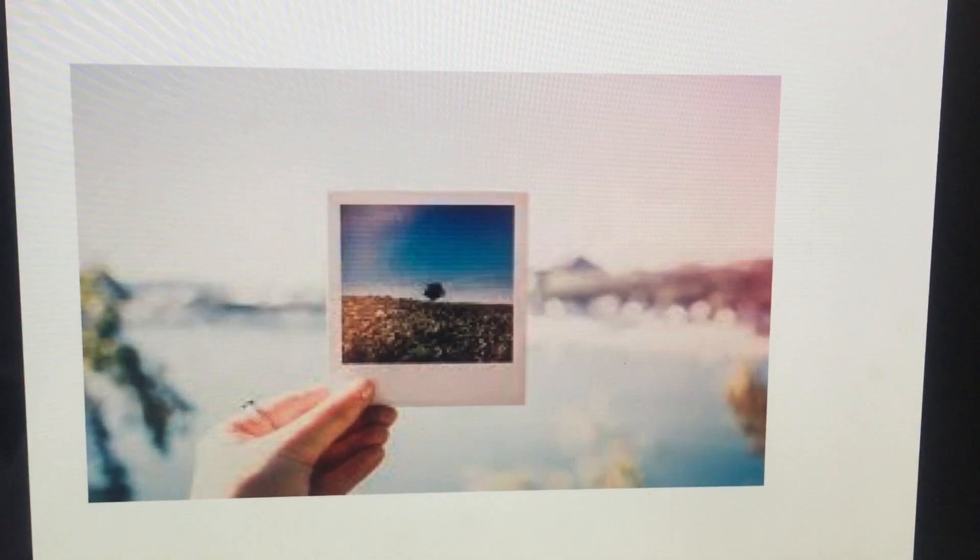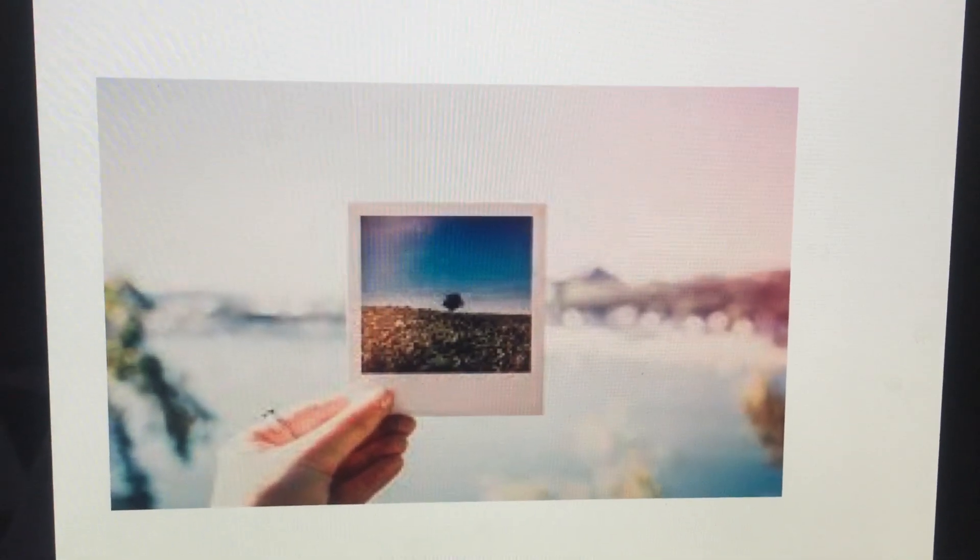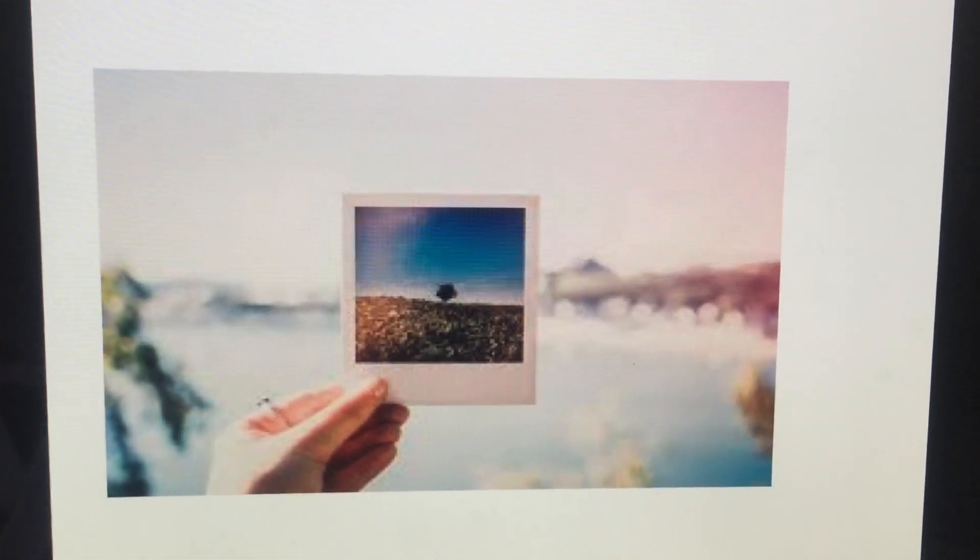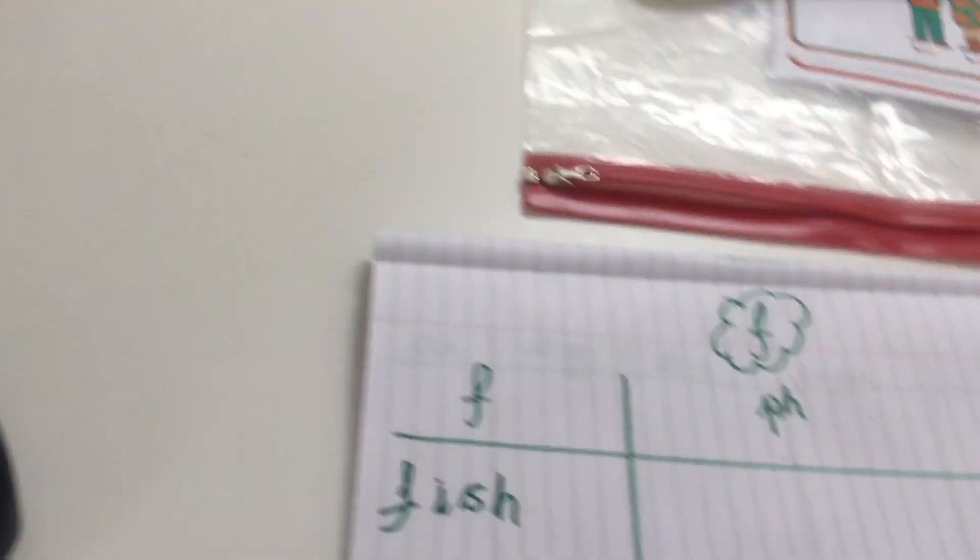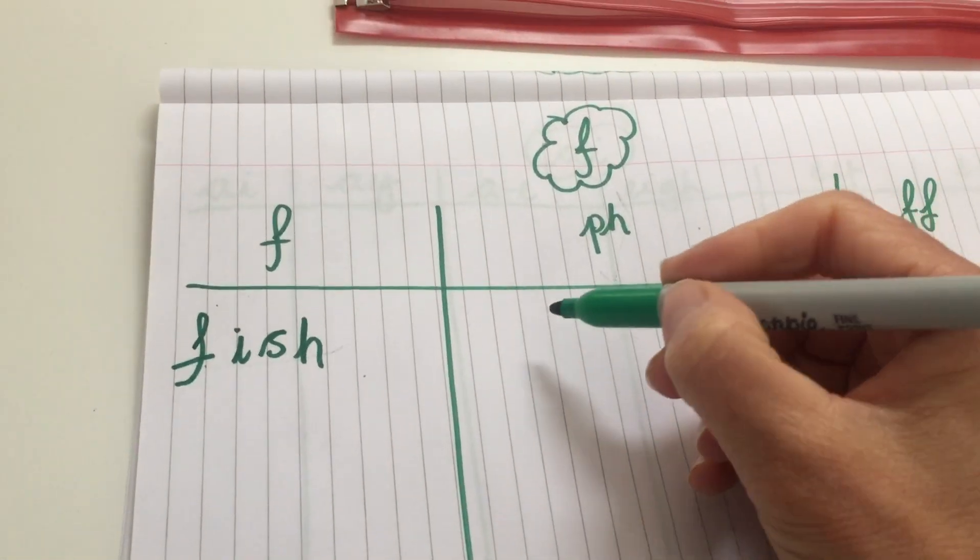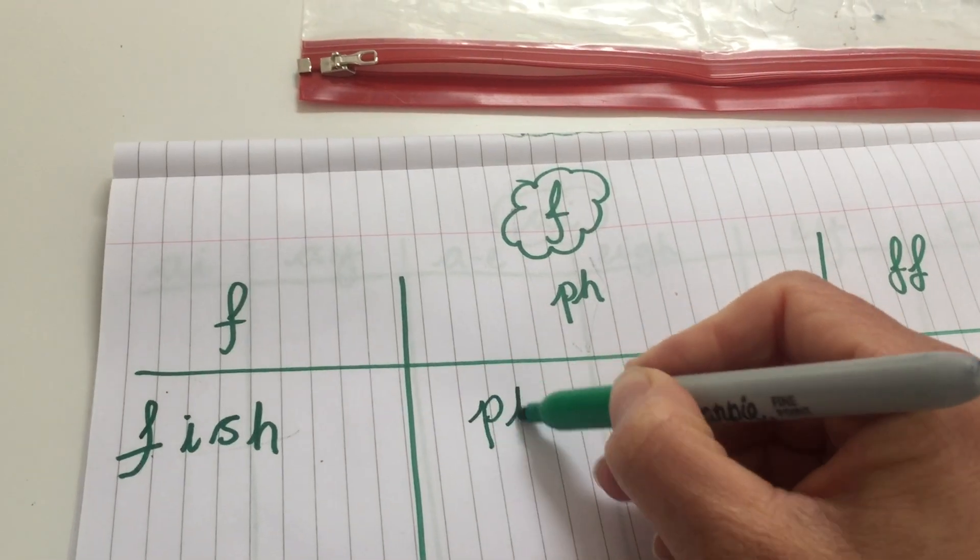Let's have a look at another picture. Oh, that lady's holding up a photo, a photo. Now that starts with the F sound, but actually that one is a P and an H making the F sound. So the word photo is going to go in this column here: P-H-O-T-O.